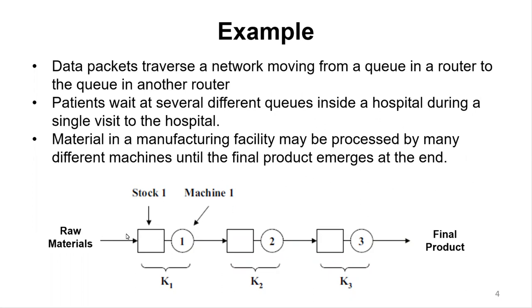So raw materials go to machine one with a queue and capacity k1, machine two with capacity k2, machine three with capacity k3, and then become the final product.